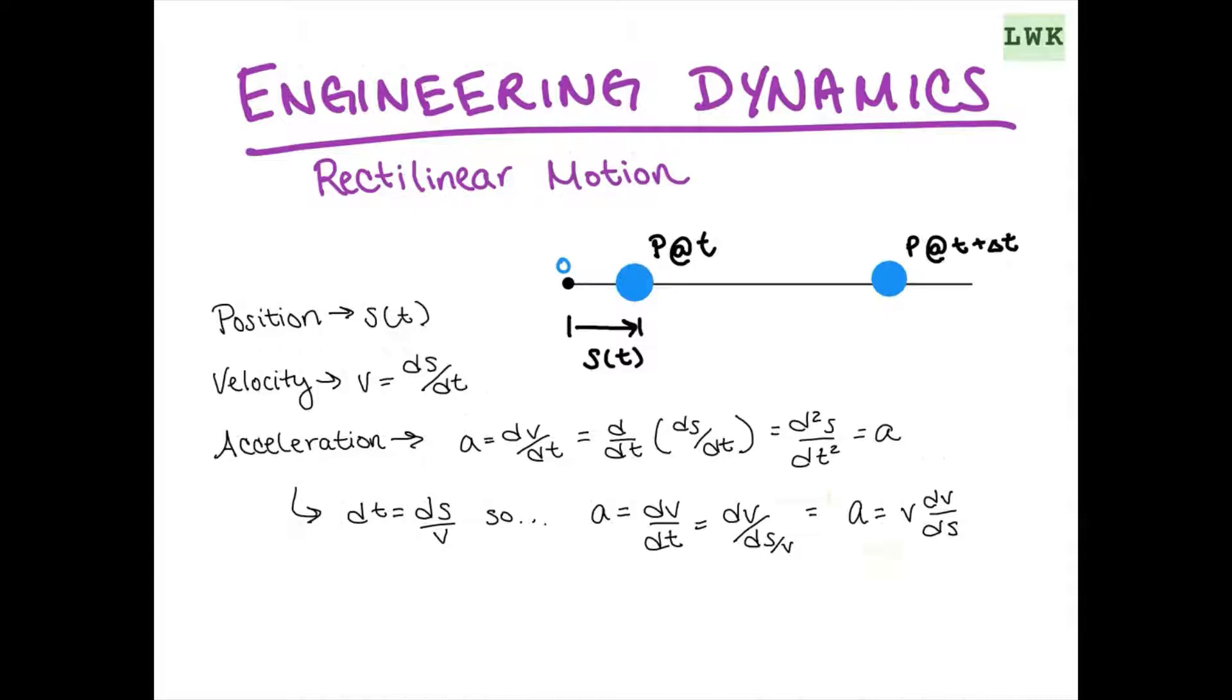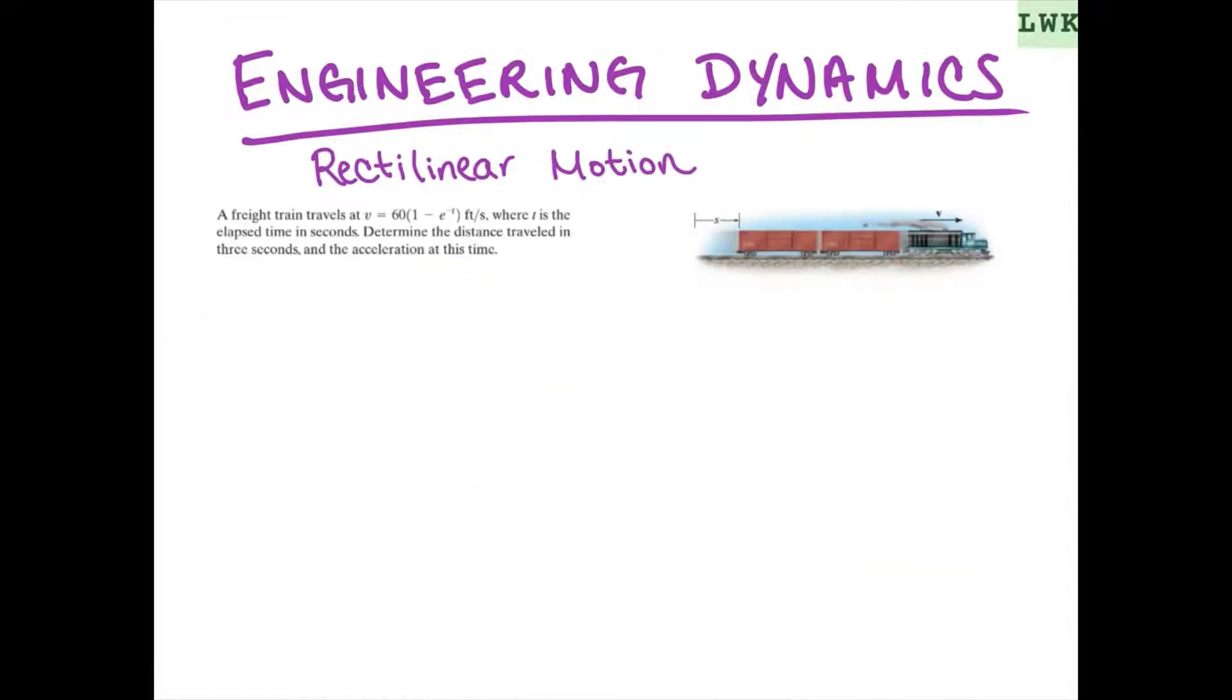So, we have a couple different ways that we can write acceleration. And a lot of these we've seen before from physics or just other classes. But this last one is pretty new. So, hopefully this makes sense. If you're confused here, we basically can say v equals ds/dt. So, we know that if we just switch our variables, that will give us dt equals ds over v.